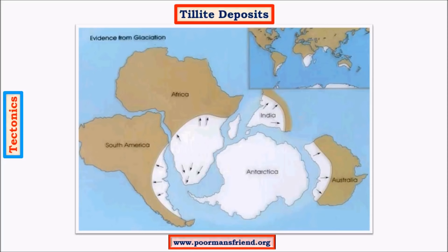Tillite deposits are another important evidence. Africa, Antarctica, parts of India, and Australia were all very close to the South Pole and experienced a glacial period, leaving sedimentary tillite deposits. These deposits are found across all those regions, supporting the theory that they were once in the same location. However, Wegener's approach to explaining this was scientifically disputed in later stages by the study of plate tectonics.